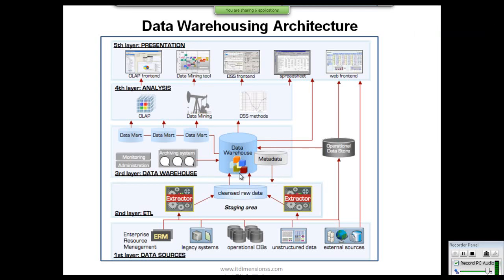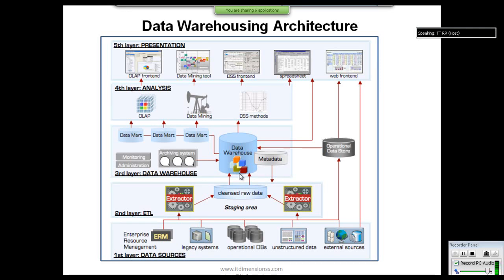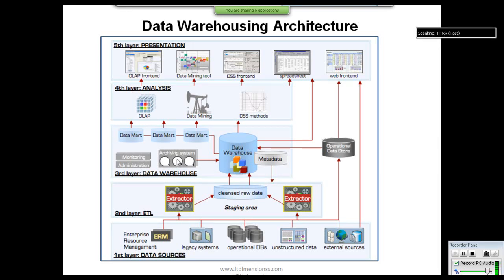When we implement a data warehouse, at time zero the size will be zero terabytes. Suppose the total capacity is 100 terabytes — when we continuously load data on a daily basis, at time X the data warehouse will be full at 100 terabytes. At that point, we use an archiving system to move out unused data, which is known as data warehouse purging and backing up. The data is backed up to archive devices such as tape drives. That is why we continuously monitor and administer the data warehouse.